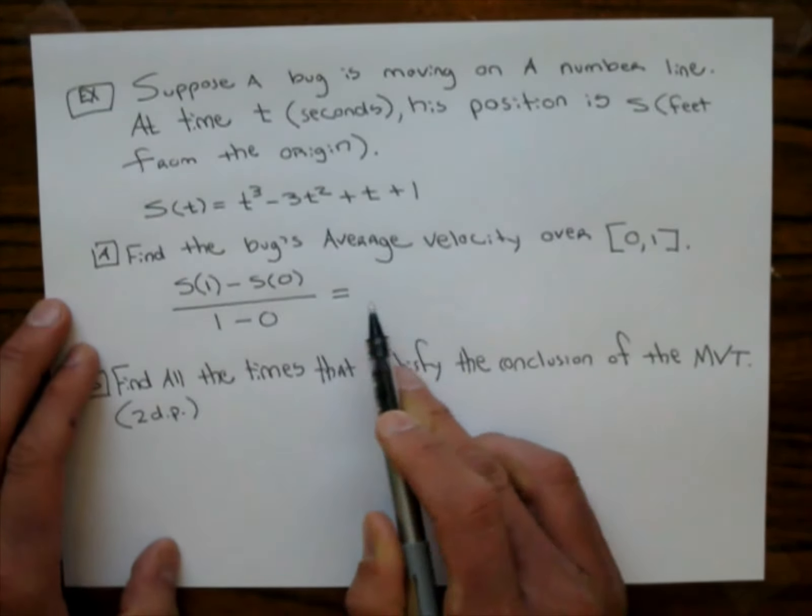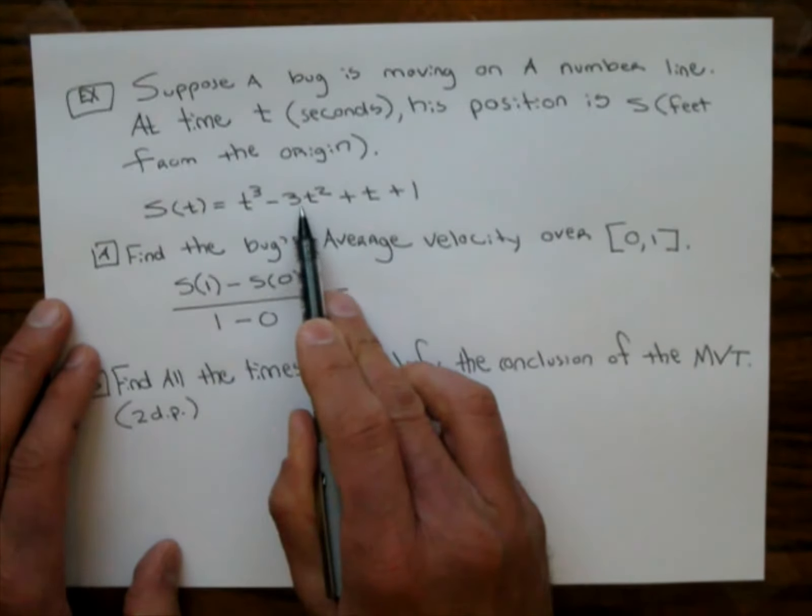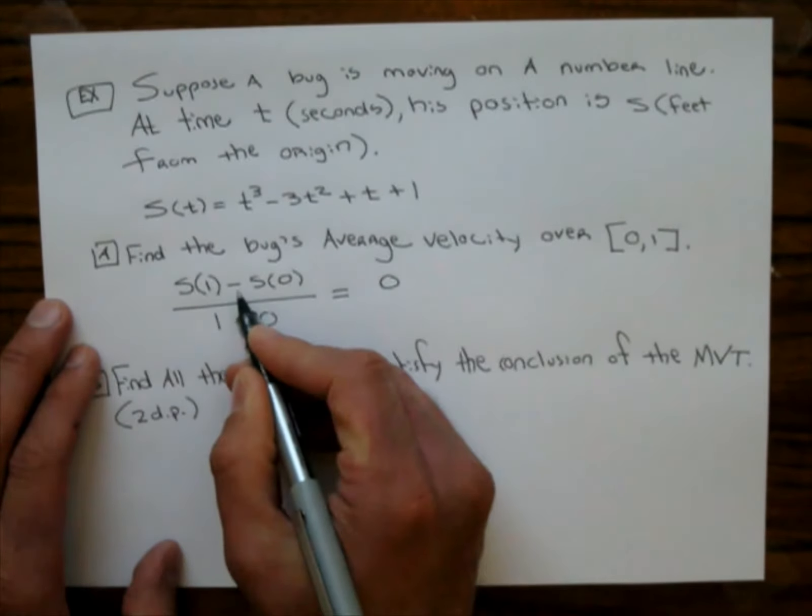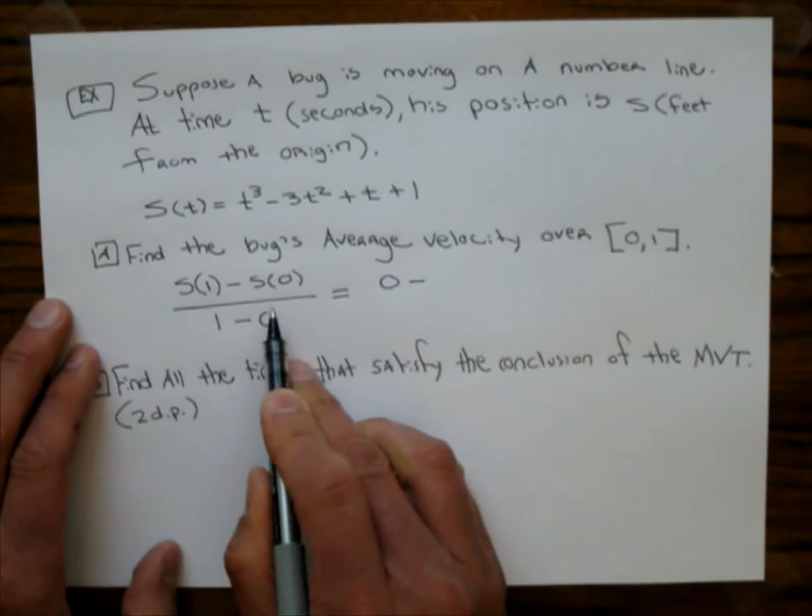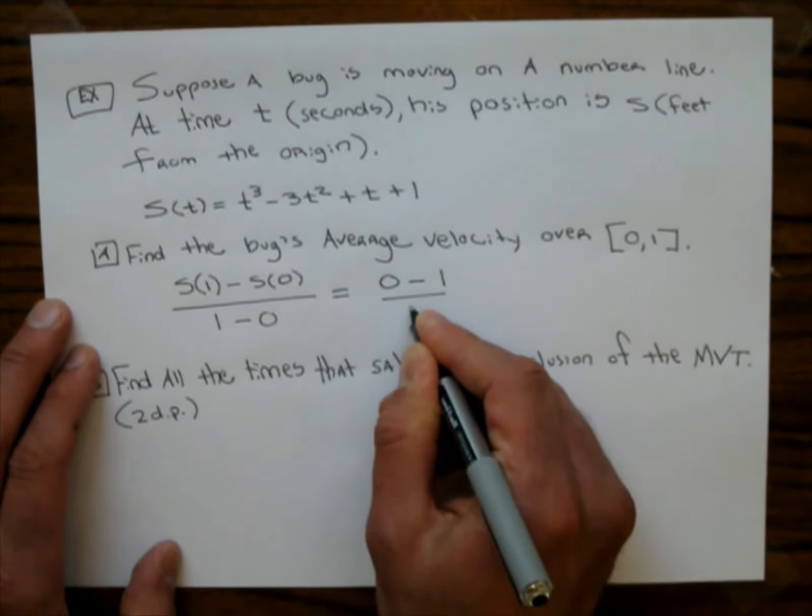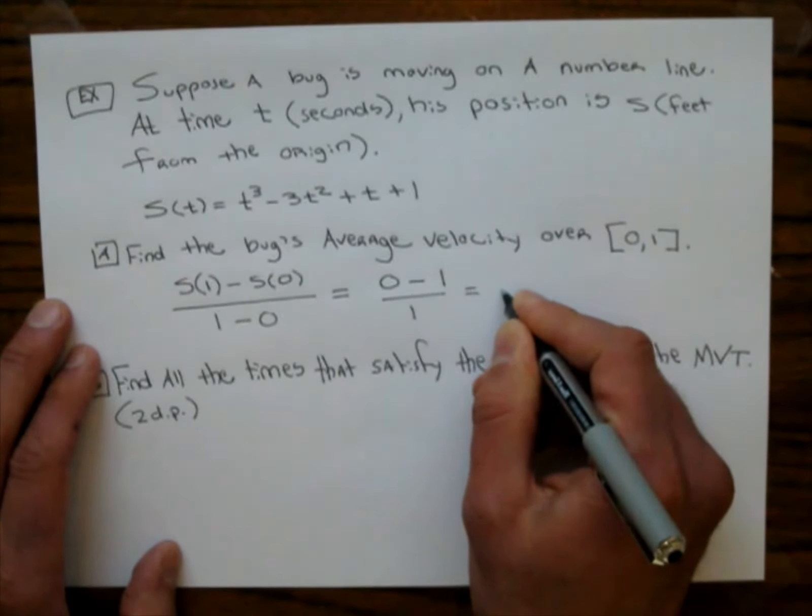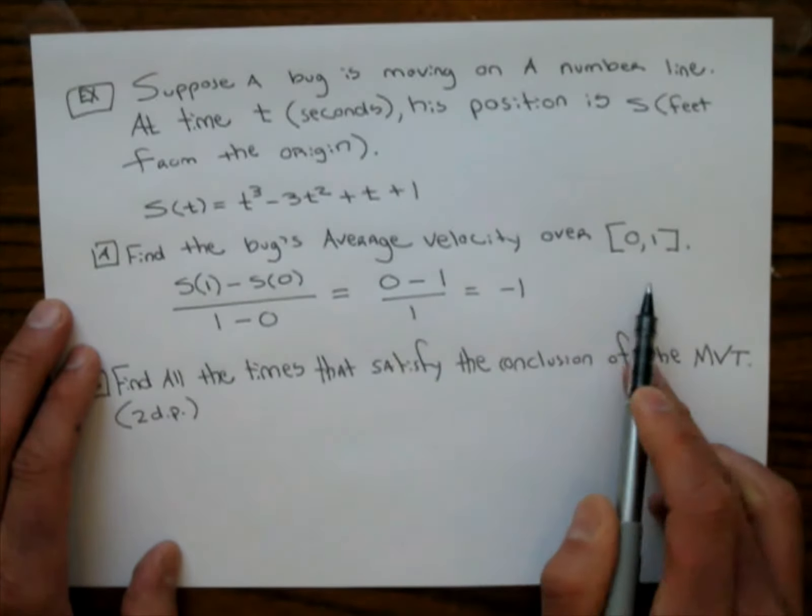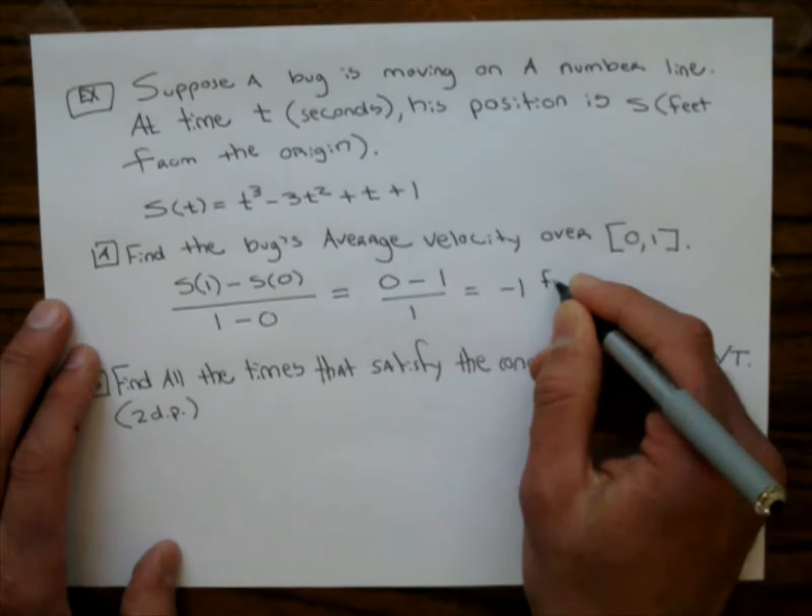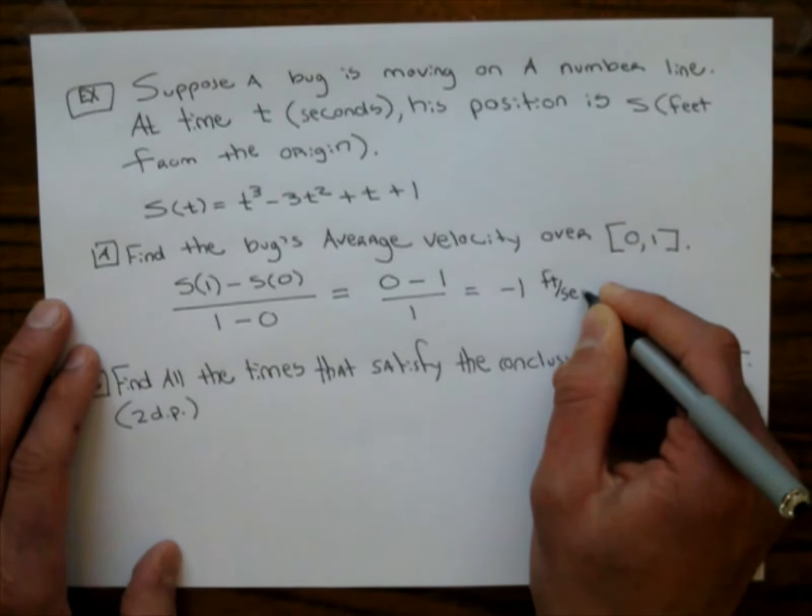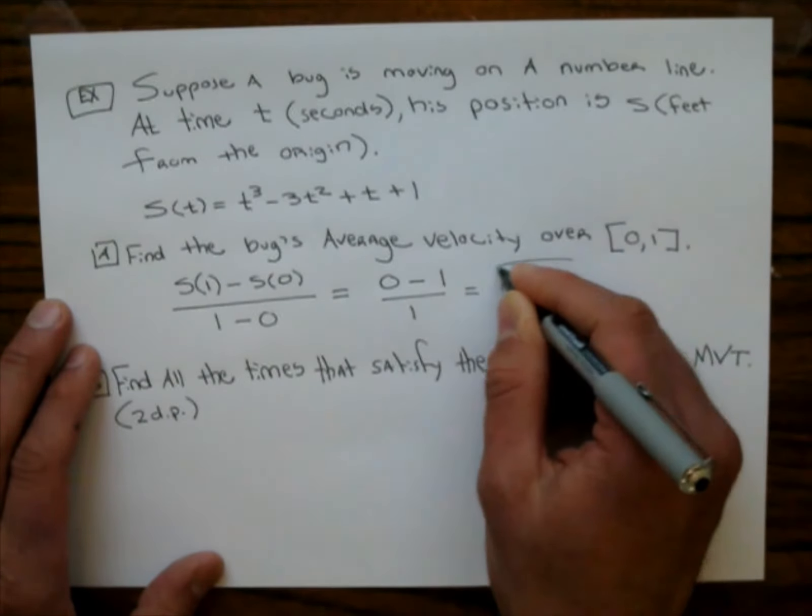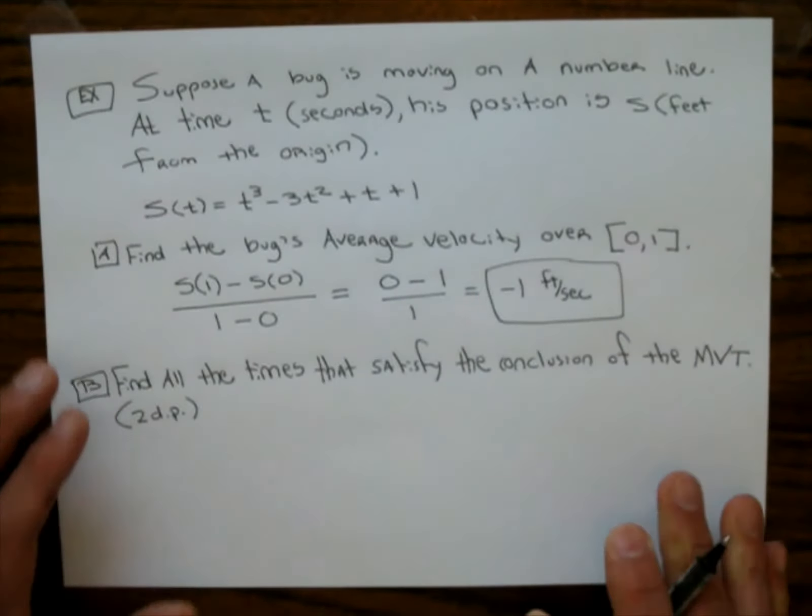And really what we do is we go s(1) minus s(0) all over 1 minus 0. Well, s(1), you plug that into this function, you get 1 minus 3 plus 1 plus 1. That's 0. Put the minus sign. S(0), that's just going to give me 1. And on the bottom I have 1. So the bug's average velocity over the time interval 0 to 1 is negative 1 feet per second. So he's kind of going to the left in that time interval.